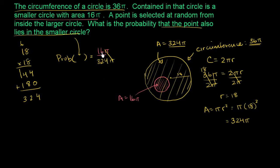And the pi's cancel out. And let's see, it looks like both of them are divisible by 4. If we divide the numerator by 4, we get 4. If we divide the denominator by 4, 4 goes into 320 80 times. It goes into 4 once, so we get an 81.